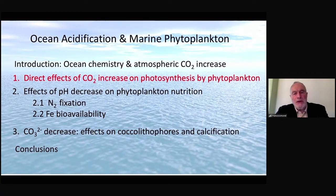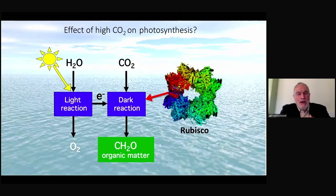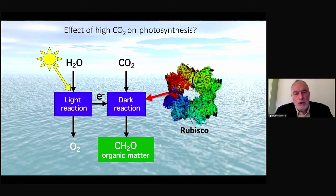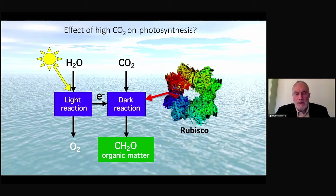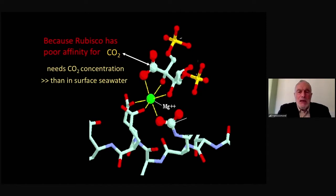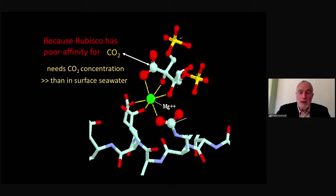The direct effect of carbon dioxide on photosynthesis by marine phytoplankton: let's go to very basic stuff, which is the photosynthesis reactions — the light reaction, which gathers the photons, evolves oxygen out of water, and passes on the electrons to the dark reaction, which makes organic matter from CO2. The important part here is this huge enzyme, Rubisco, probably the most important enzyme in the world because it's responsible for making most of the organic matter in the world. This enzyme has a fairly poor affinity for CO2. Remarkably, it probably evolved when CO2 was much higher in the Earth's atmosphere, and the CO2 that saturates Rubisco is much, much higher than what's available in the surface of the ocean.